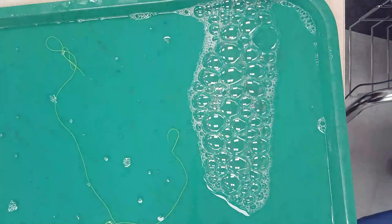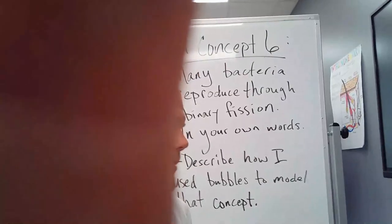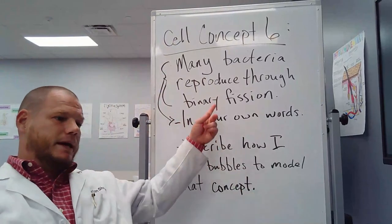Think about this as a zygote, an egg that gets fertilized by a sperm. It's just a ball of dividing cells. It's kind of like this. It'd be more of a cluster, a bunch of balls of these cells, but kind of the same process. Just splitting, just copying, copying, copying, copying. You can see quickly how a bacterial population could grow quite quickly. So you see, I had one cell, and now I have lots of cells. That's it. That is cell concept six. Bubbly, bubbly. Which says that many bacteria reproduce through binary fission. Put that in your own words. Describe how I used bubbles to model the cell concept.